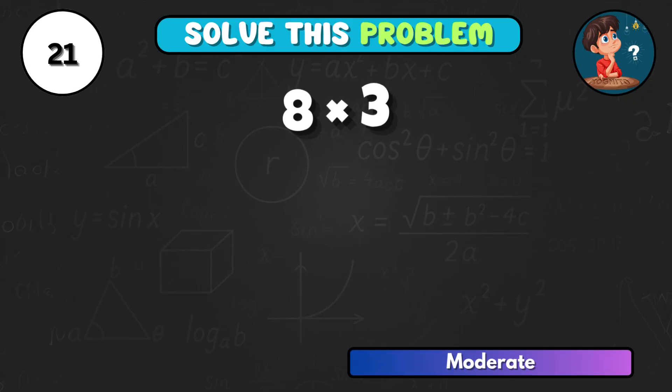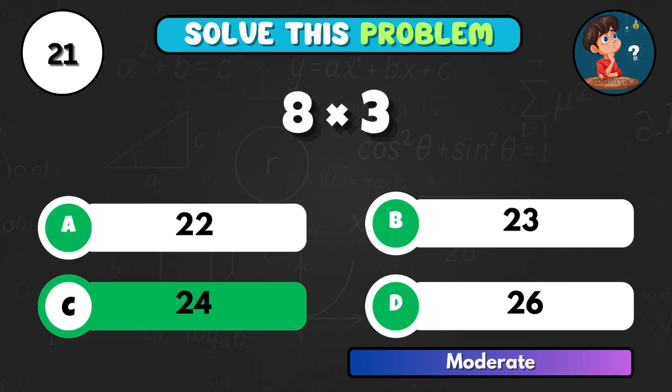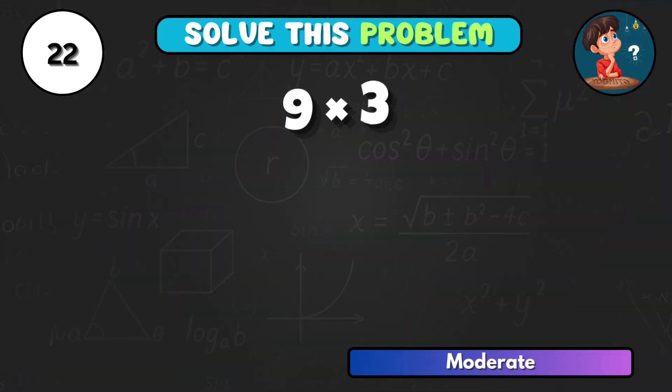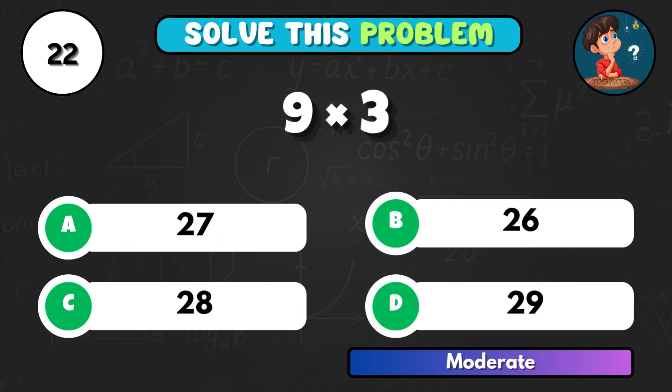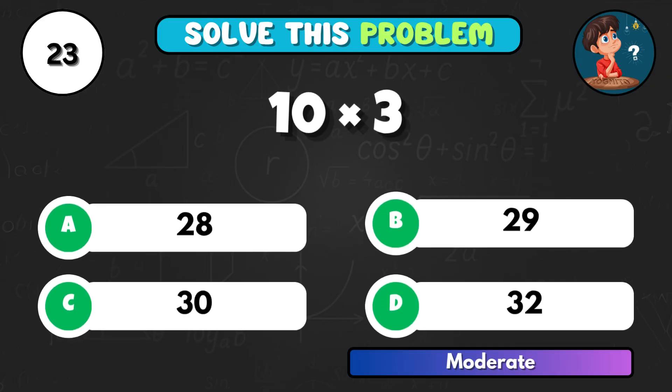8 times 3, quick math. Option C, the result is 24. 9 times 3, what's that product? That's A equals 27. 10 times 3, what's your total? Correct choice C, that's 30.